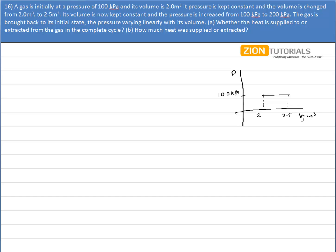After that, the volume is now constant and the pressure is increased from 100 to 200. Now let's say this is my 200 kPa, with volume constant.